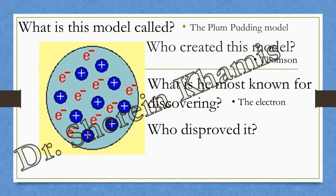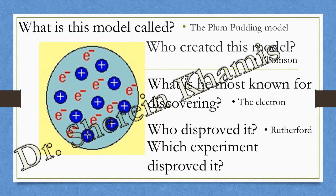Who disproved or disagreed with the discovery of Thompson? The second scientist who came after him was Rutherford, who disproved or cancelled what Thompson discovered. Which experiment disproved it? Which experiment was used to explain that the plum pudding model was wrong? We said that we have the gold foil experiment. I think it's a heavy question.